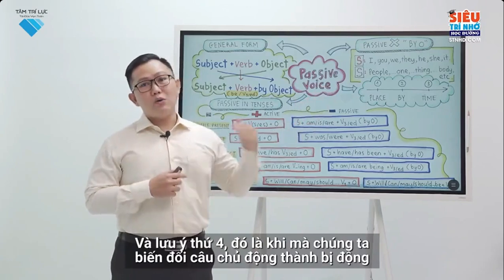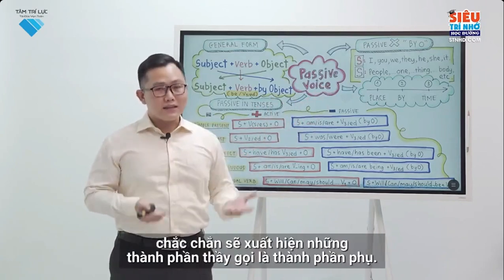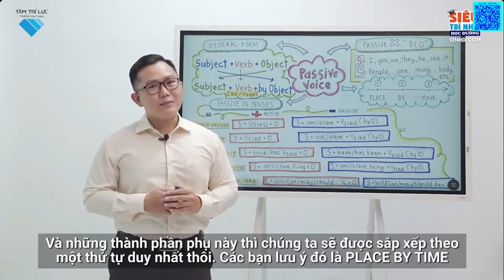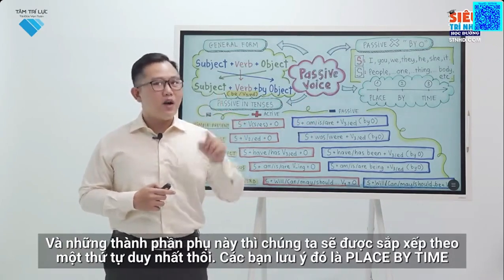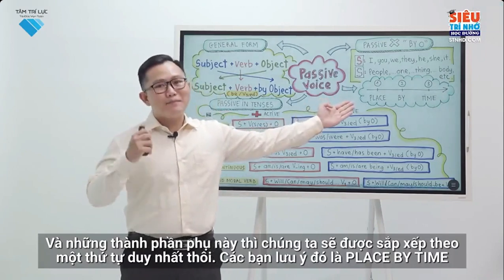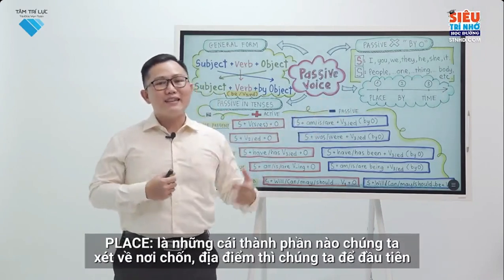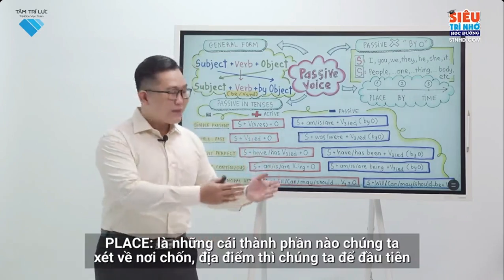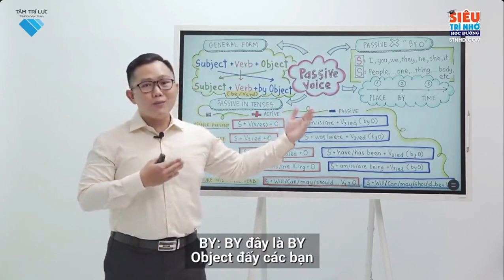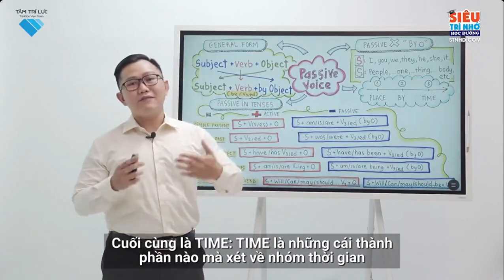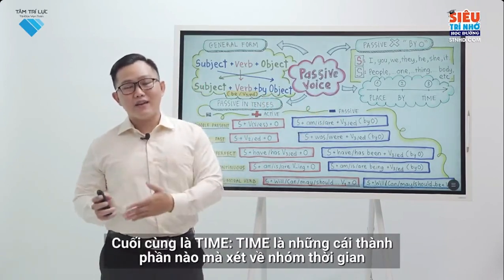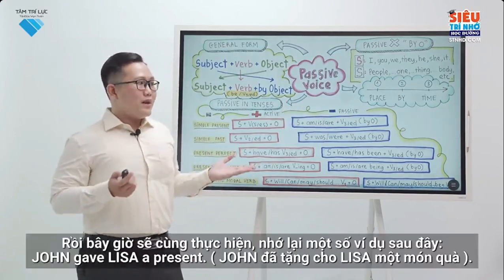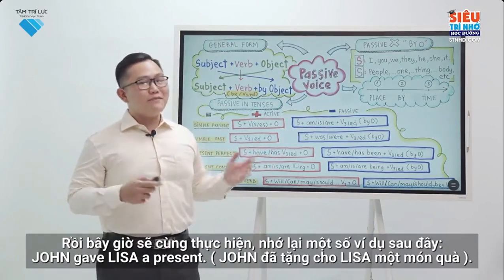Also, when the subject is a thing-type word — something, anything, everything, somebody, anybody, everybody — we will not use by-object in the passive voice. The fourth note: auxiliary components will inevitably occur and must be sorted in a unique order: place first, then by-object, and finally time. Please take note: place → by → time.